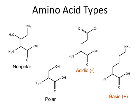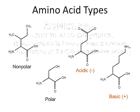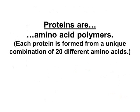The bottom line going forward into our next video is this: proteins are amino acid polymers and each protein is formed from a unique combination of 20 different amino acids. Those 20 amino acids are categorized based on their side chains and for our purposes can be categorized as polar, nonpolar, acidic, or basic. In the next video we'll start to look at how proteins are put together and ultimately get into their true complex conformations.